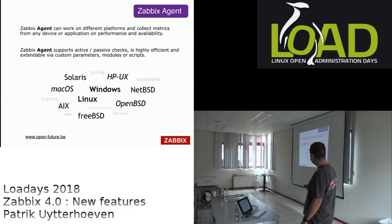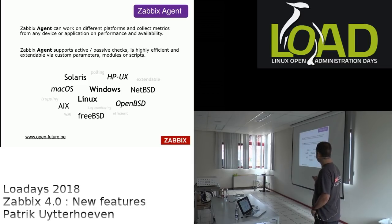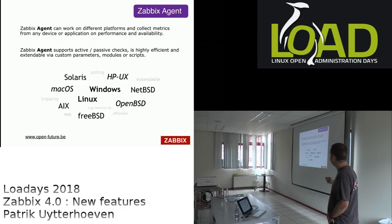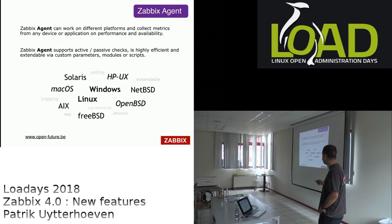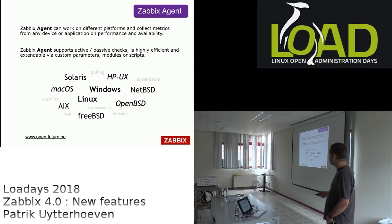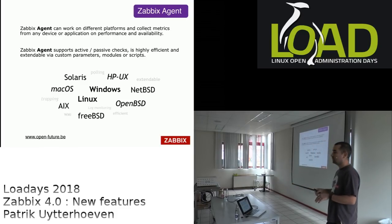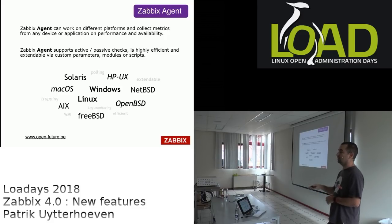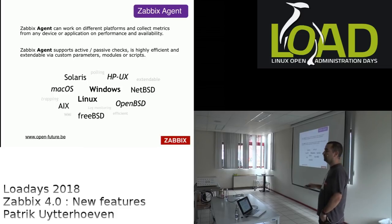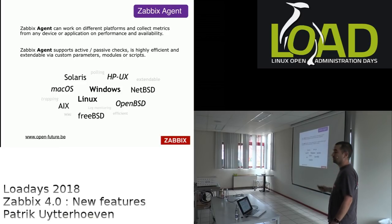Zabbix agents are available for most platforms: Solaris, HP-UX, BSD, OpenBSD, FreeBSD, Linux, AIX, macOS, and Windows. A Zabbix agent can collect metrics from any device or application for performance and availability. Once installed, you can write your own scripts or use the built-in functions. The agent collects metrics and sends them to the Zabbix server.